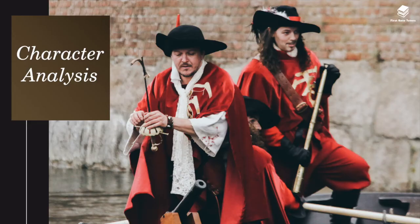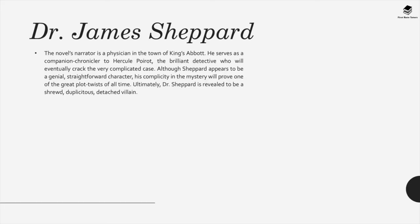On to character analysis. Dr. James Shepard, the novel's narrator, is a physician in the town of King's Abbott. He serves as a companion chronicler to Hercule Poirot, the brilliant detective who will eventually crack the very complicated case. Although Shepard appears to be a genuine, straightforward character, his complicity in the mystery will prove one of the great plot twists of all time. Ultimately, Dr. Shepard is revealed to be a shrewd, duplicitous, detached villain.